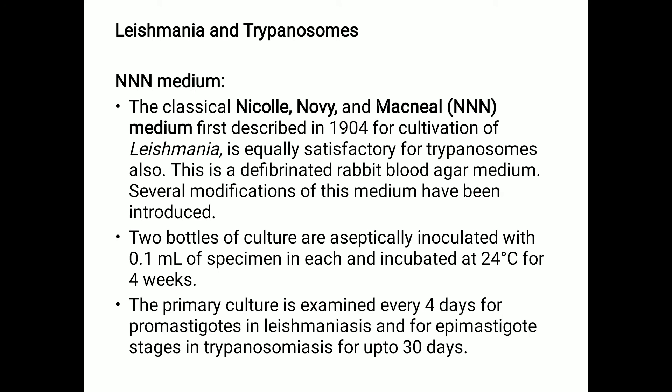For culture, two bottles are aseptically inoculated with 0.1 ml of specimen in each, then incubated at 24 degrees Celsius for around four weeks. The primary culture is examined every four days for promastigotes in the case of leishmaniasis, and for trypanosomiasis we look for the presence or absence of epimastigotes for up to 30 days.